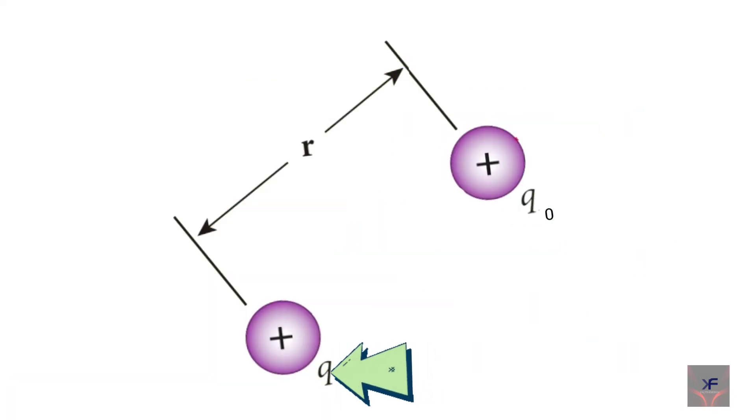Now let's consider a source point charge Q which is located at a point in space. Another point charge Q0, which is the test charge, is kept at a certain distance R at point P from the charge Q.